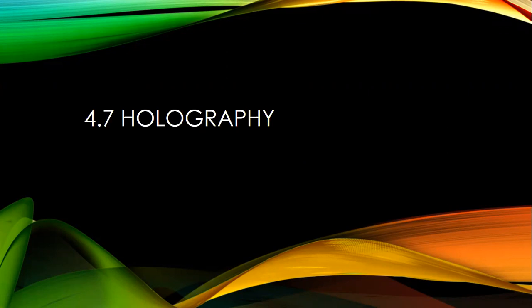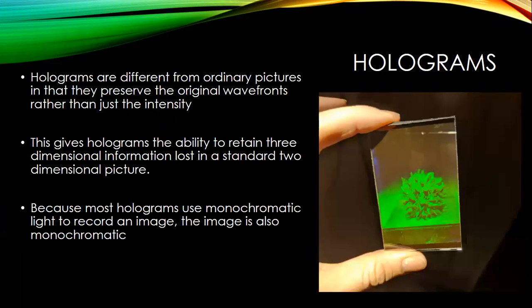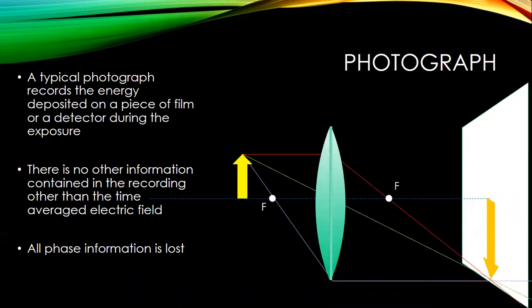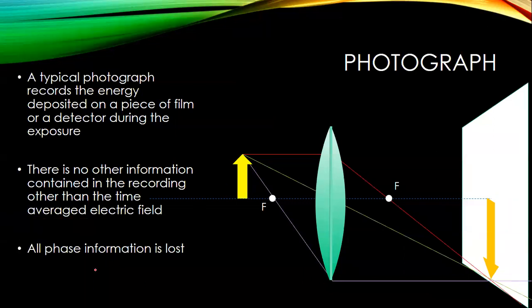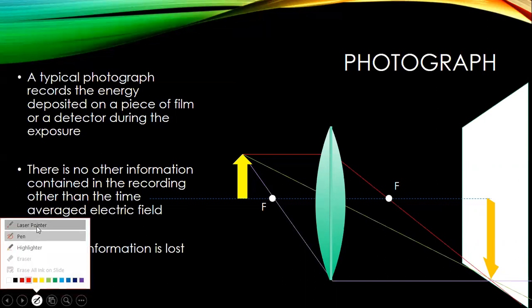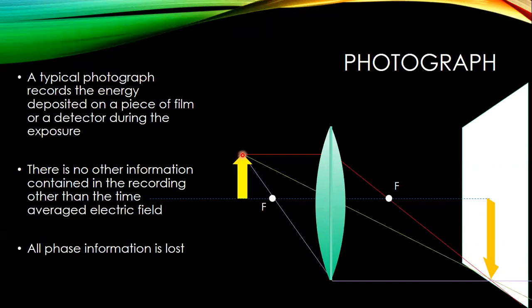However, true three-dimensional displays would require something called holography. Holography is different from a photograph. When we record a photograph, we take some object — in this case, an arrow representing a three-dimensional object — and project it onto a photographic plate or detector, creating a two-dimensional projection of the object in the form of an image.